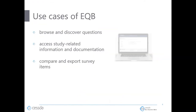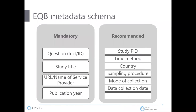The main use cases of the EQB are to browse and discover questions that have been fielded in any of the member institutions, to access study-related information like documentation, and to compare and export survey items for reuse in future surveys. We use the EQB metadata schema, which is divided into mandatory and optional or recommended fields. In total we have around 100 fields. The question text, study title, and publication year are mandatory, and we have a wide range of additional fields such as interviewer instructions, sub-question text, and response categories.